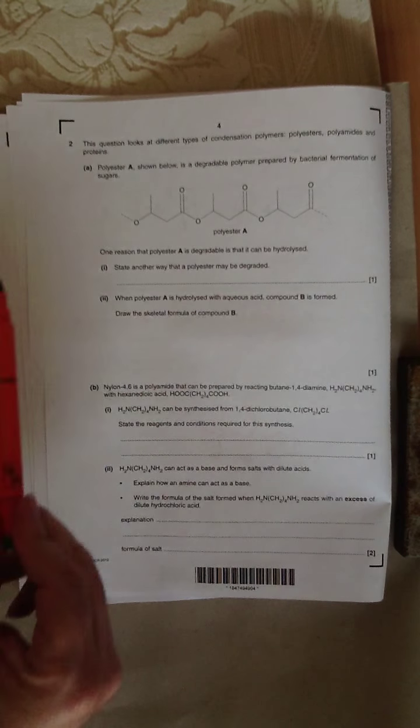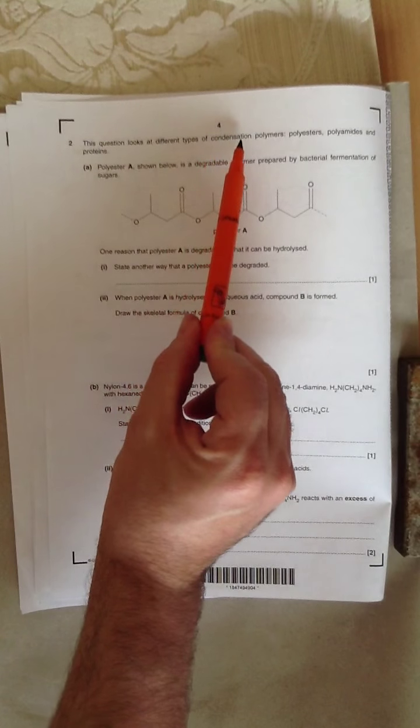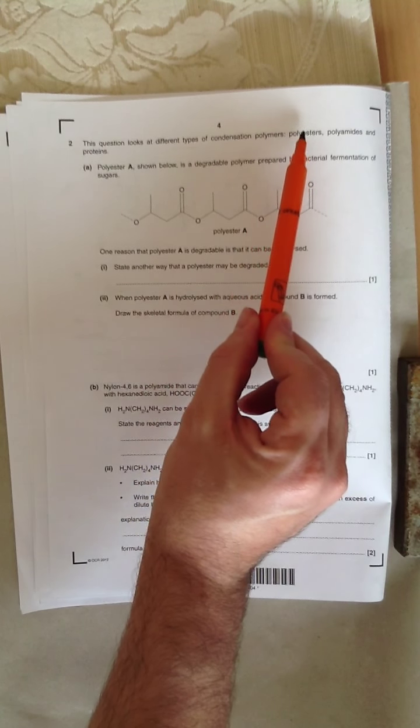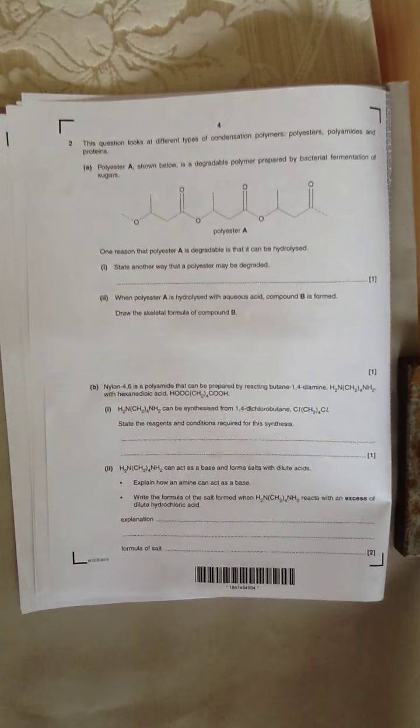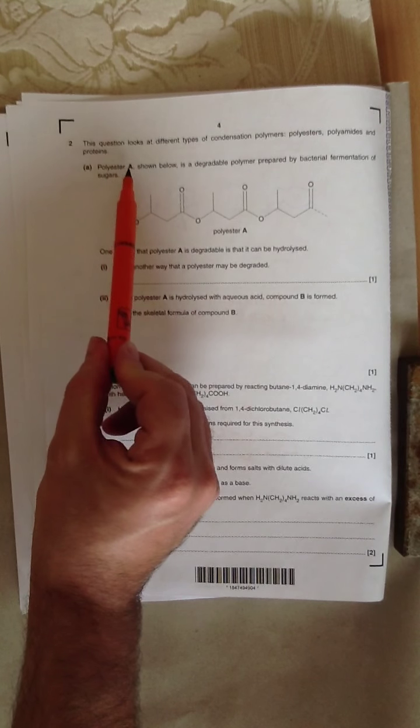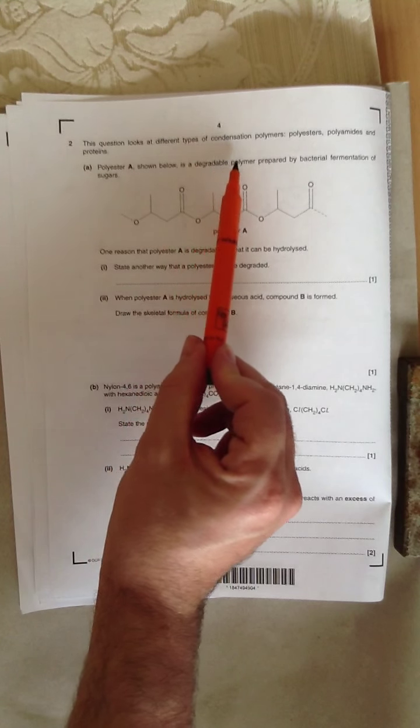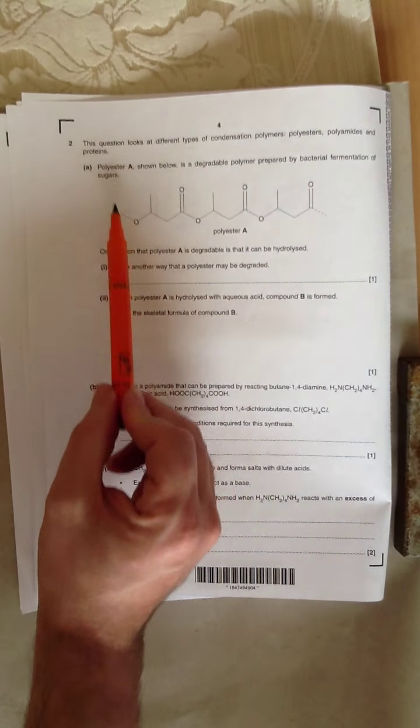And it starts by saying, this question looks at different types of condensation polymers, polyesters, polyamides, and proteins. Polyester A, shown below, is a biodegradable polymer formed by bacterial fermentation of sugars.